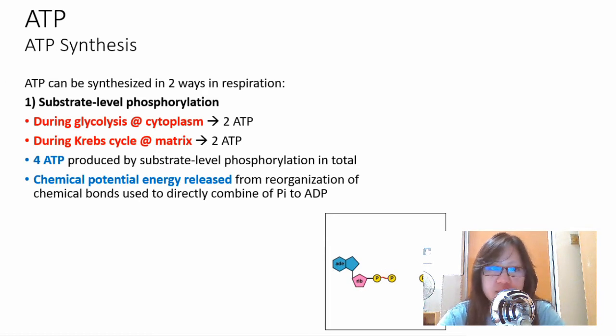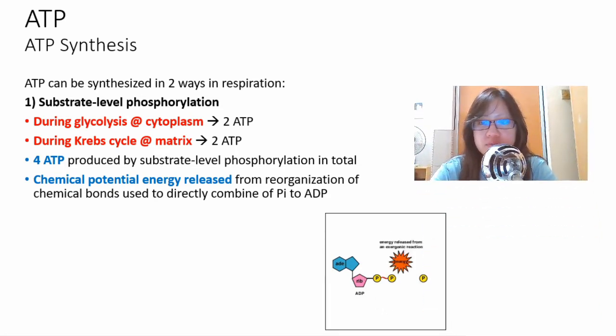It's called substrate level phosphorylation because chemical potential energy released from reorganization of chemical bonds is used to directly combine inorganic phosphate to ADP. The potential energy that is chemical potential energy released directly causes this molecule to form.